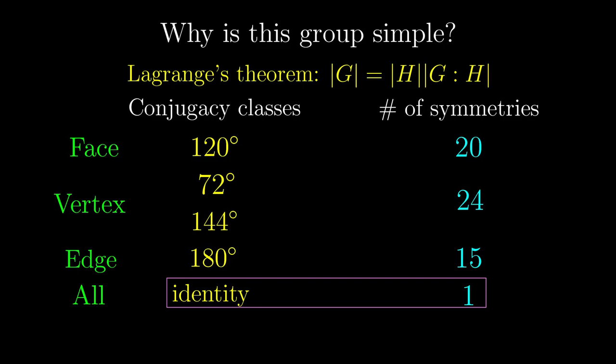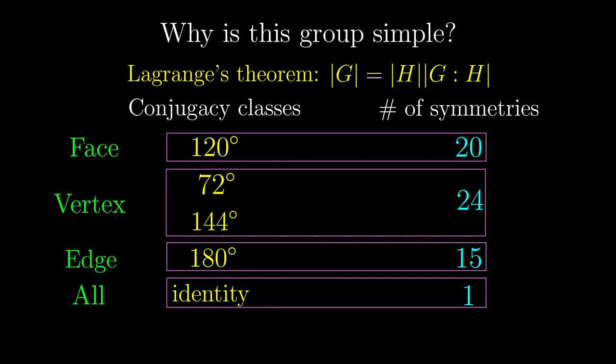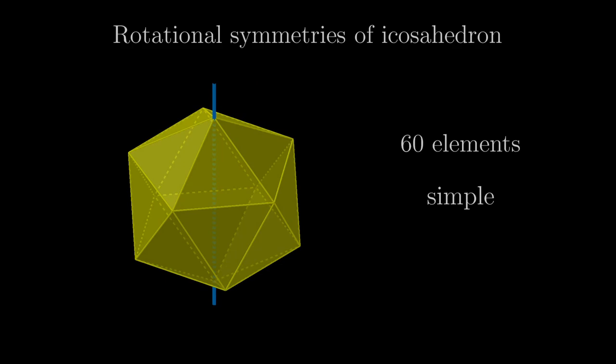So the only normal subgroups are when we only tick the identity, and if we want something more, we have to tick the entire group. And so, this group is simple.